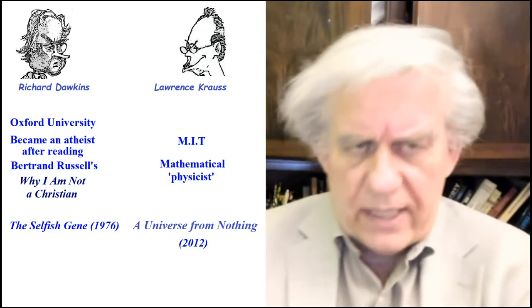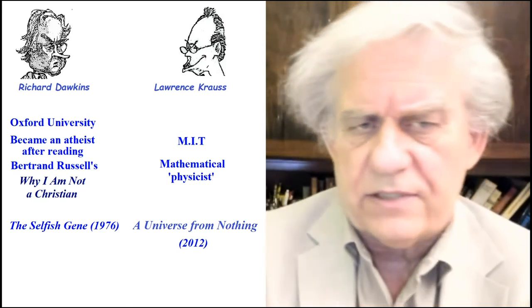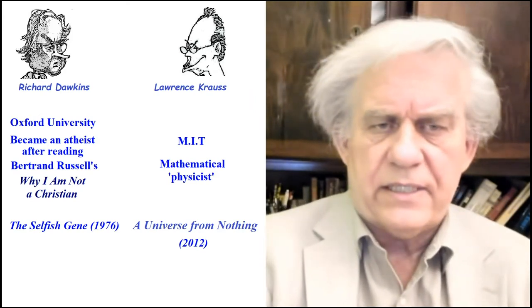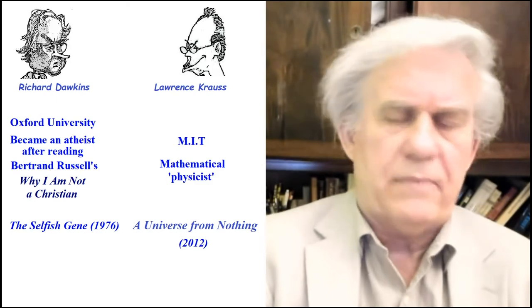Talking about 'nothing' and 'something,' today we have two fellows. One is Richard Dawkins, which we've been looking at the last couple of weeks. The other fellow is Lawrence Krauss. Now we've got these two fellows together — let's see what they have to say about something and nothing. Just a quick bio on them. We covered Richard Dawkins the other day — he's from Oxford University and became a born-again atheist after he read Russell's 'Why I Am Not a Christian.'